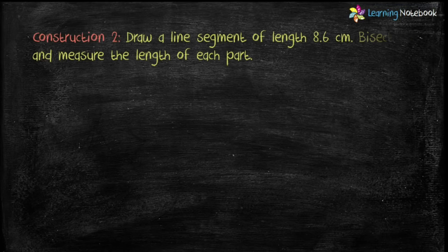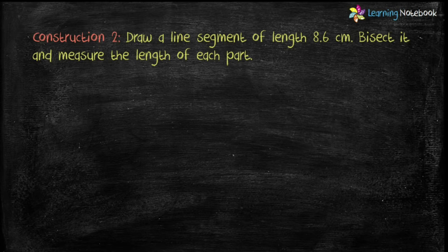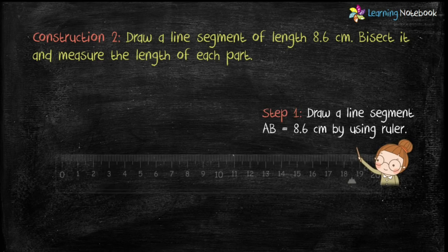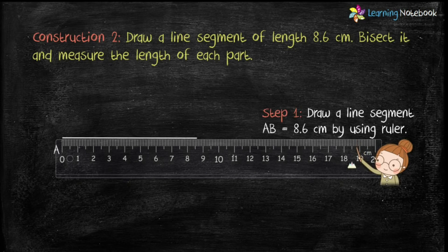So let's start with the construction of perpendicular bisector of a given line segment. Question is: draw a line segment of length 8.6 centimeter, bisect it and measure the length of each part. Let's construct it. Step 1 is draw a line segment AB equals to 8.6 centimeter with the help of a ruler.